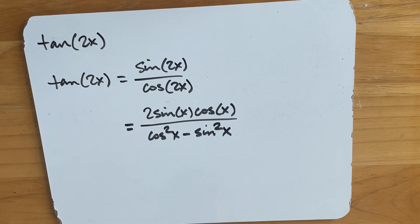So since we're trying to find the value of tan of 2x, it's probably a good idea if our final answer had tangents in it. So we're going to go with option 2.